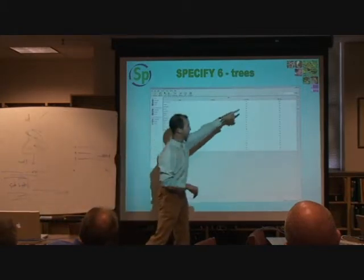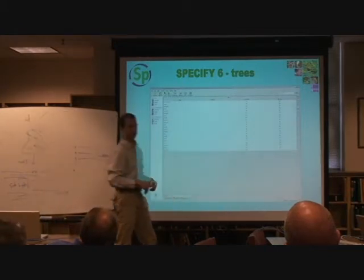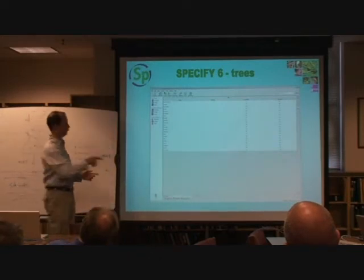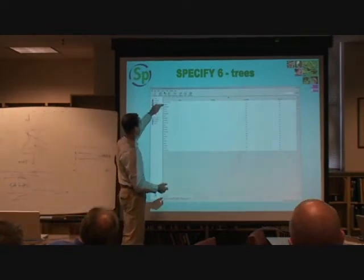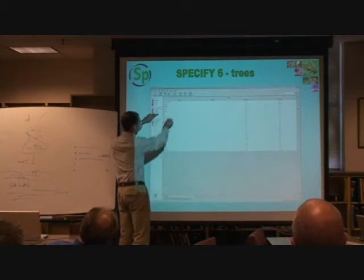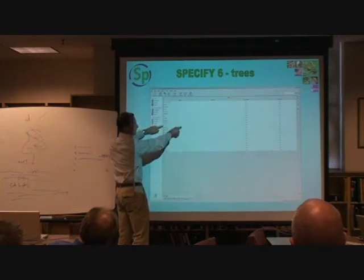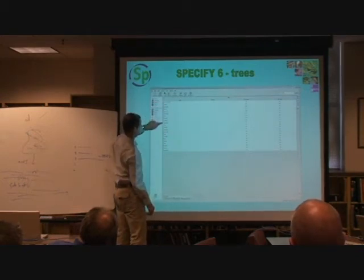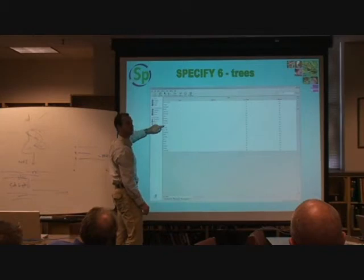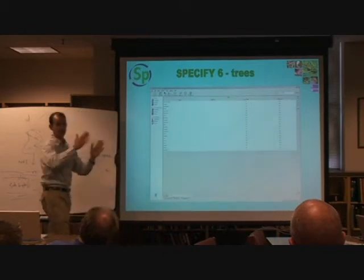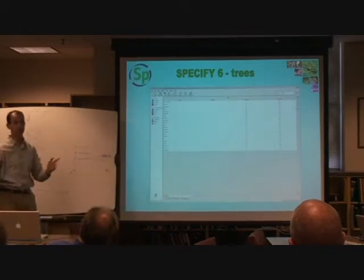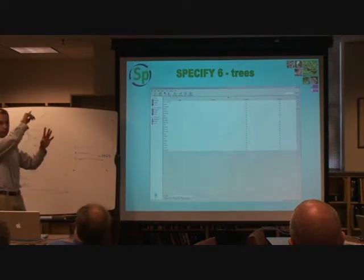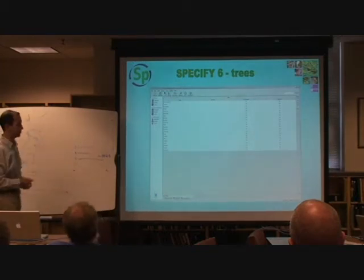You can also decide which of these ranks you want to be enforced. So if you want people to be able to add a kingdom, skip intermediate levels, and then add an order, you can mark certain ranks as enforced and leave others unenforced. You can decide exactly which ranks people must include in order to build the tree structure.